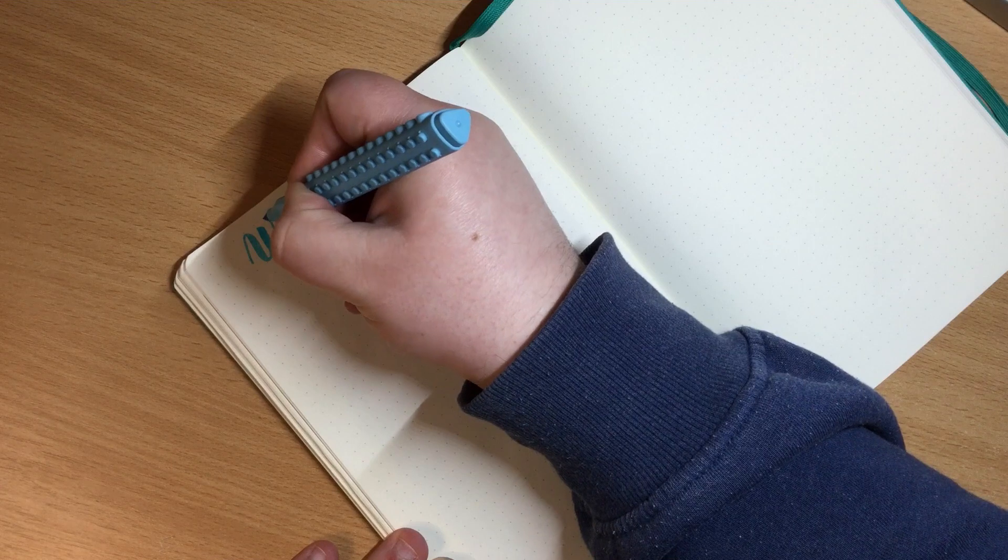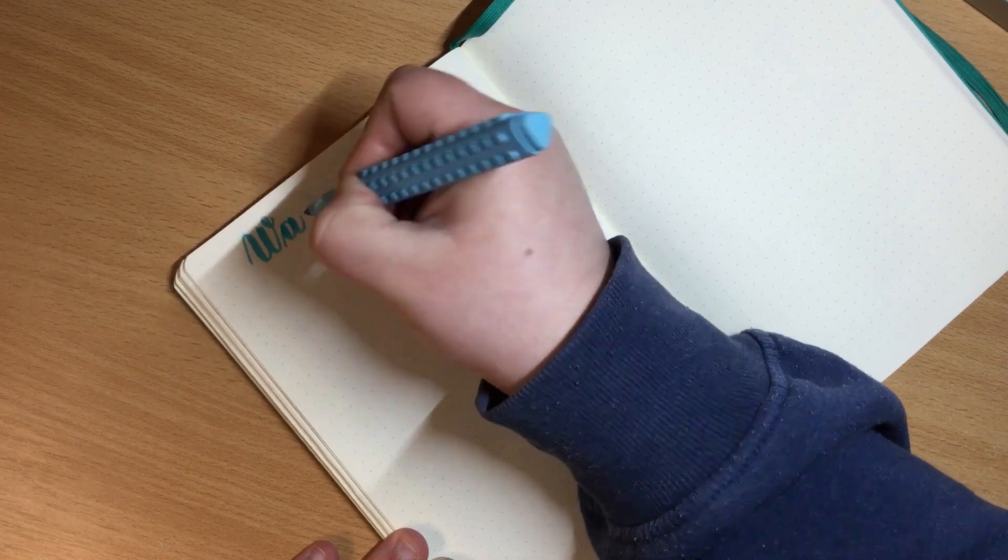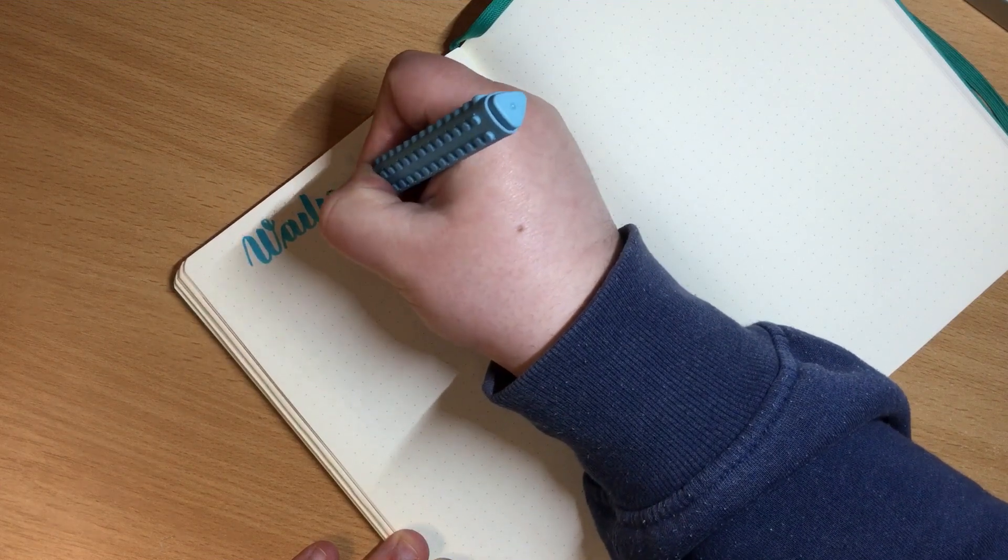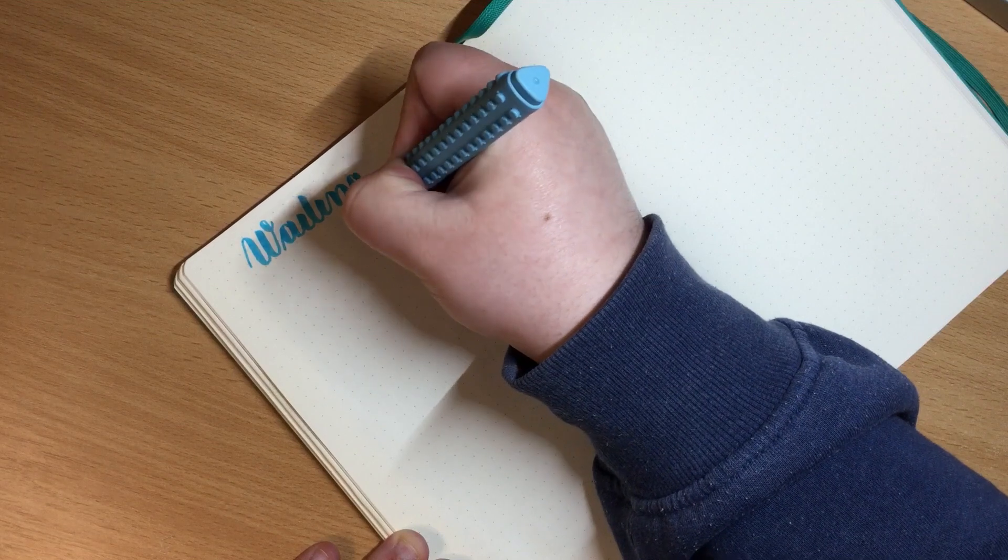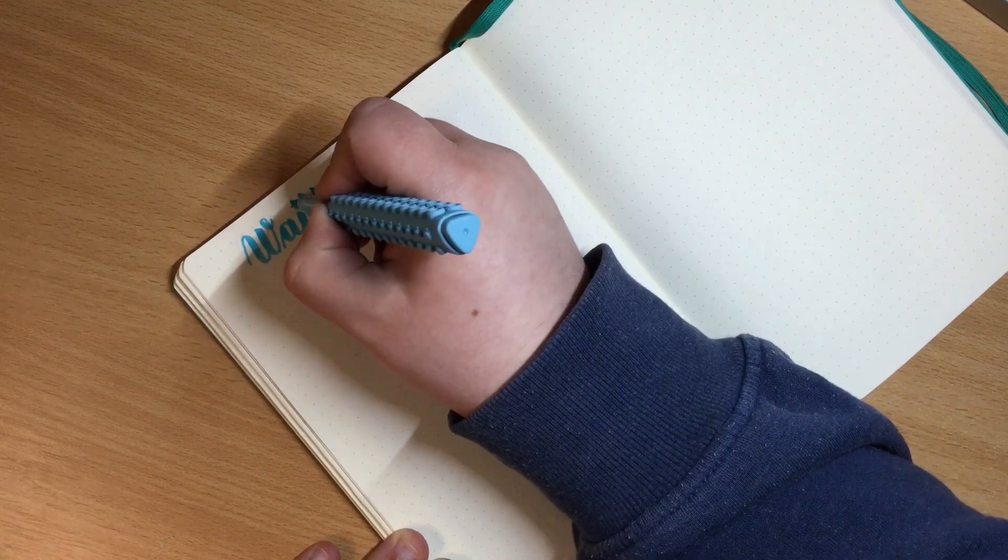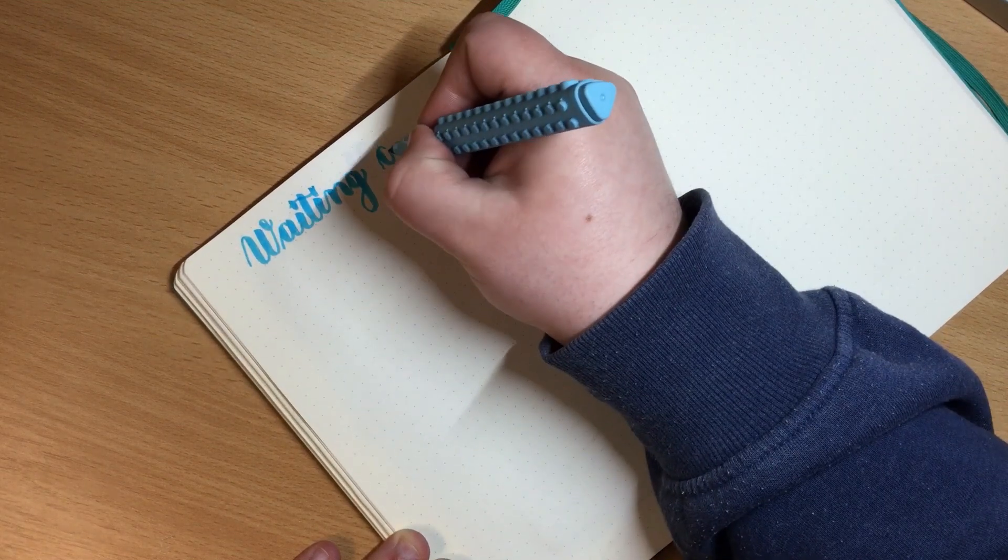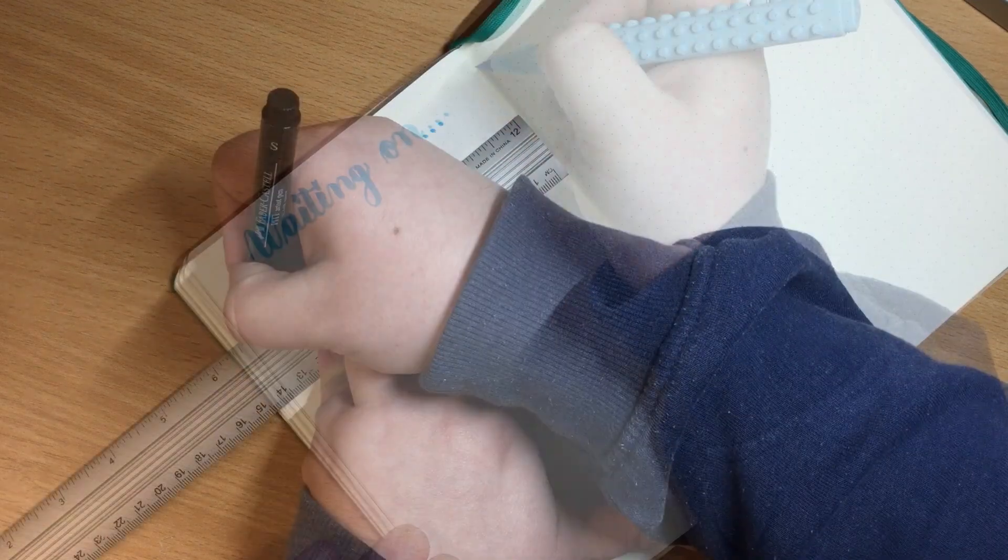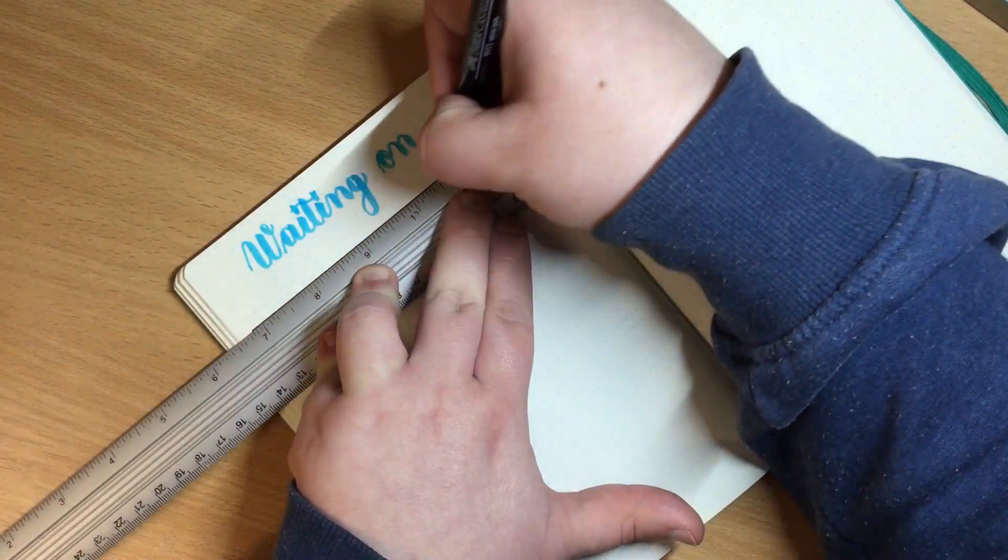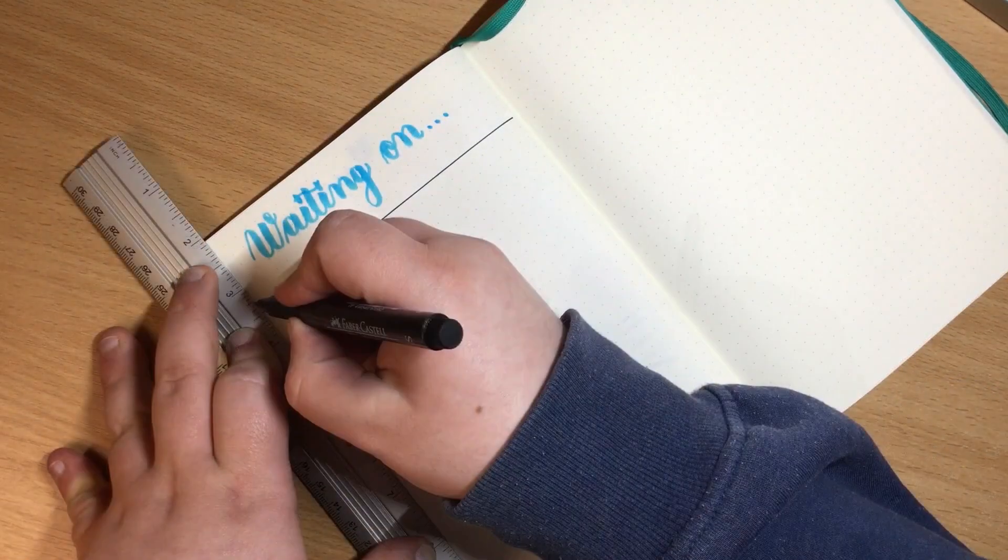Moving on I'm setting up a new waiting on list since my last one is almost full. For this I'm using another Artline sticks brush pen in the light blue color. Also I'm using a ruler and a Pitt artist pen in a small size.